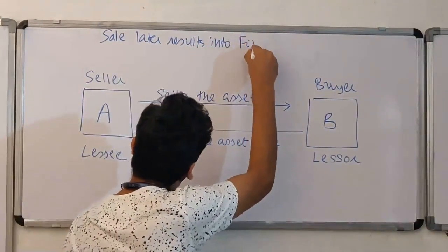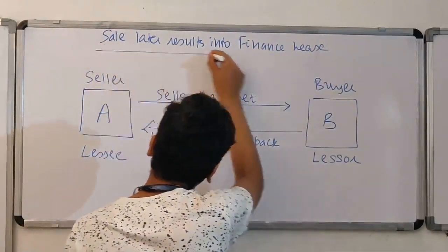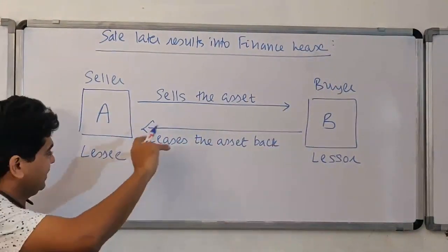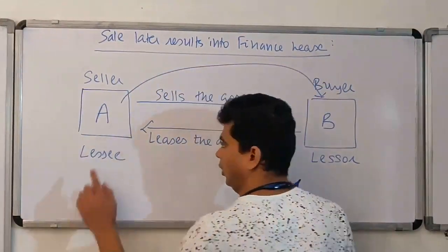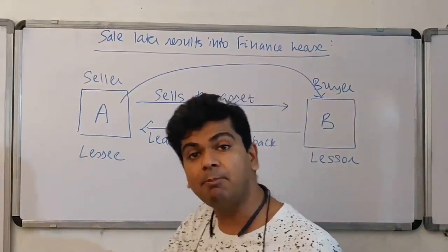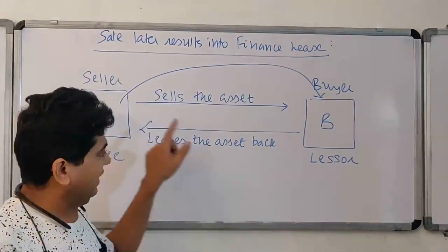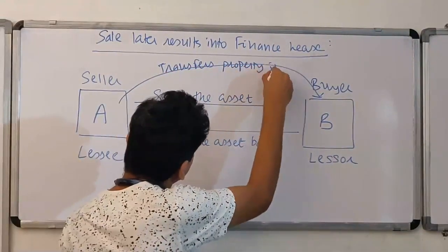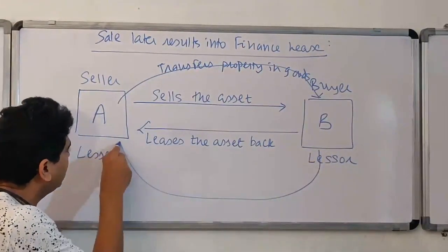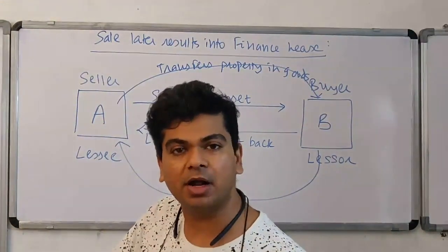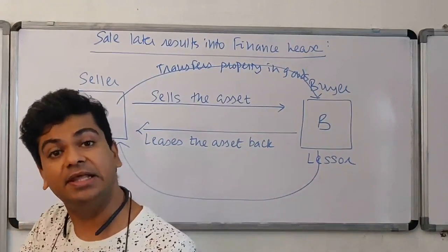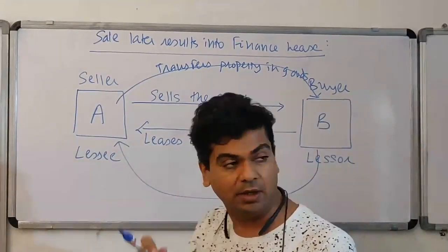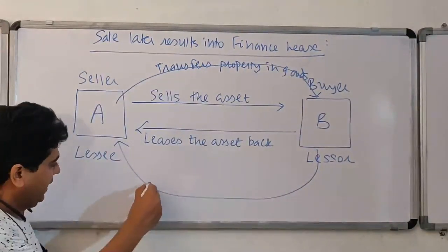In this situation, A is selling the asset to B. When A sells to B, A is transferring property and goods in favor of the buyer. Then you are entering into a finance lease. Under Accounting Standard 19, a finance lease is a lease where the lessor transfers substantial risk and rewards incident to ownership to the lessee. So once you enter into a finance lease, the lessor transfers those risks and rewards back.